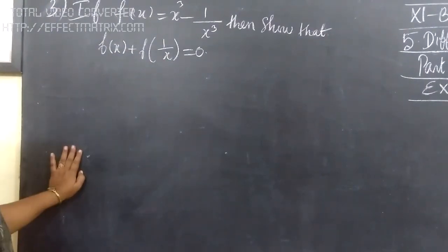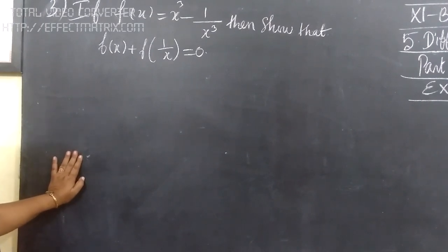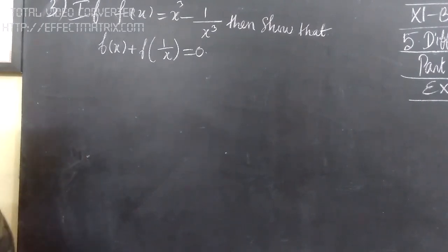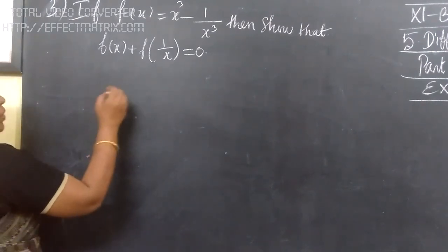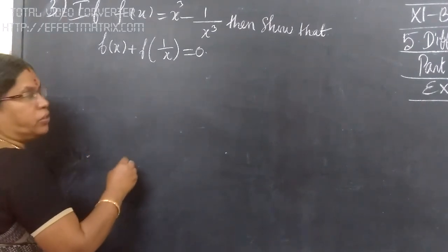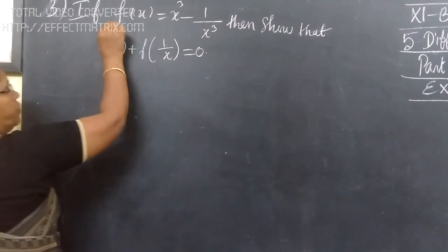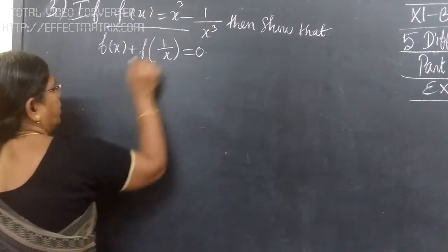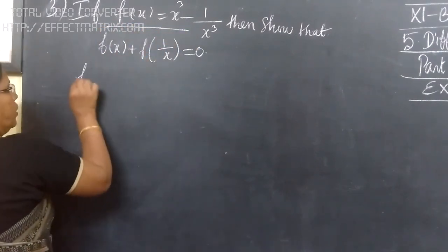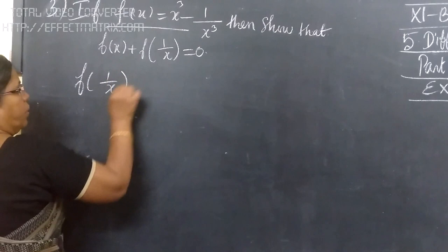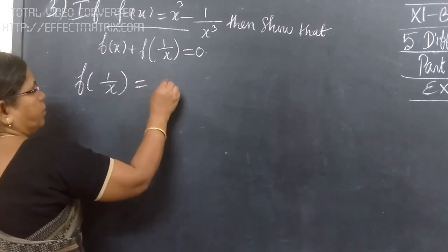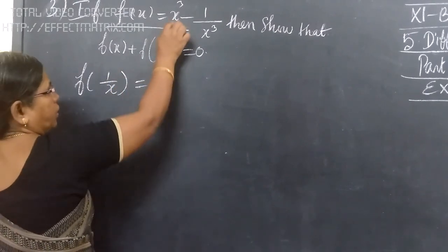If f of x equals x cube minus 1 by x cube, then show that f of x plus f of 1 by x equals 0. And also, if f of x is given, show that f of 1 by x equals x.